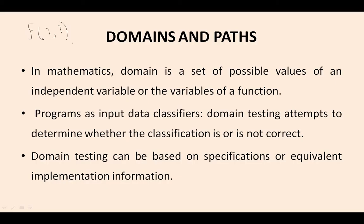How can the domain be represented? Actually, this domain is also one kind of variable, and likewise range is also one kind of variable. Domain is a set of possible values of the independent variables of the function — how many possible values are there for a function, that can be regarded as a domain.